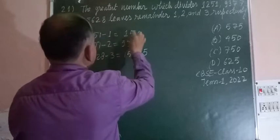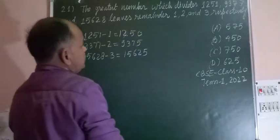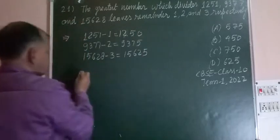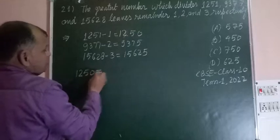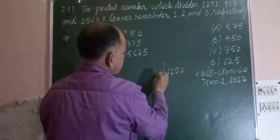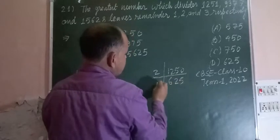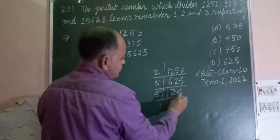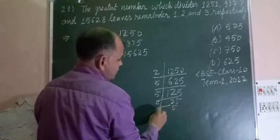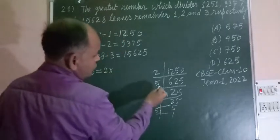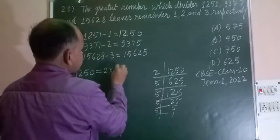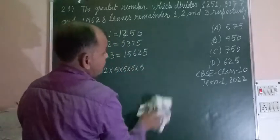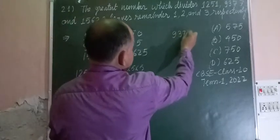Now we take the HCF. We find the factors of 1250. We divide by 2 to get 625, then by 5 to get 125, by 5 to get 25, by 5 to get 5, and by 5 to get 1. So 1250 equals 2 times 5 to the power of 4.